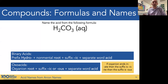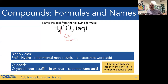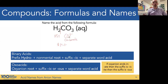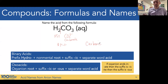We have a hydrogen cation and an aqueous symbol — we have an acid. When we dissociate it, we have the carbonate CO3 2− anion, so we need two H+ to counter the charge. Our ion is an oxoanion with an -ate suffix, so carbonate becomes carbonic — carbonic acid. No hydro because it's an oxoacid.